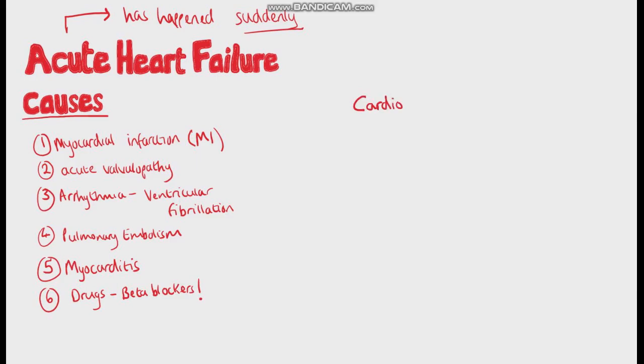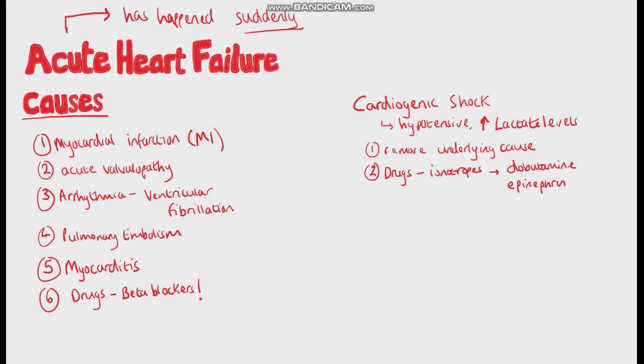These patients can move quickly towards cardiogenic shock, which is where they'll be hypotensive and you'll see lactate levels rising. In that case, you'll need to remove the underlying cause, for example reperfusion in a myocardial infarction, restoration of sinus rhythm in an arrhythmia and surgery in an acute valvular problem. Then the heart may need to be supported and you may give inotropic agents like dobutamine, epinephrine or levosimendan or you may use mechanical devices such as the aortic balloon pump or even ECMO.